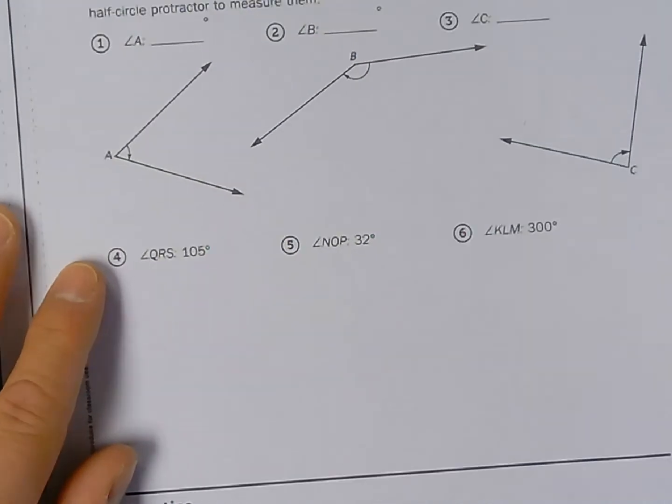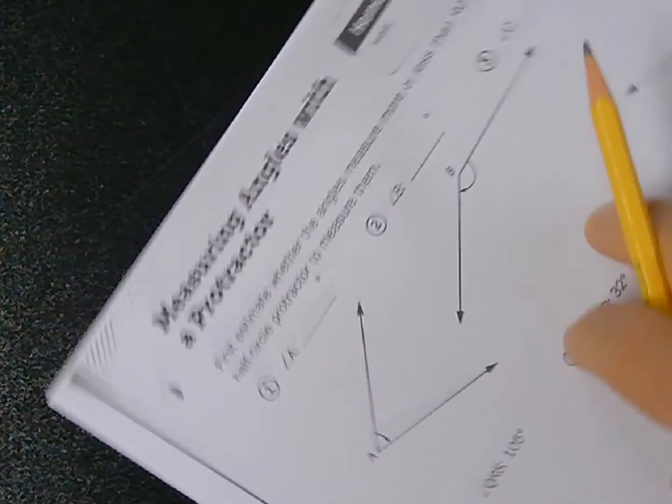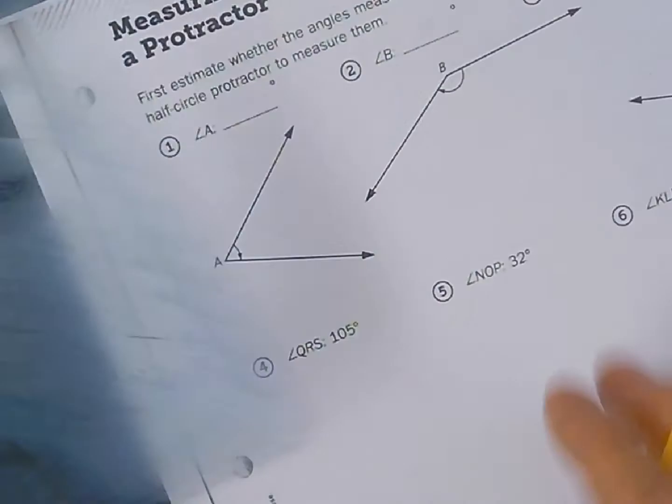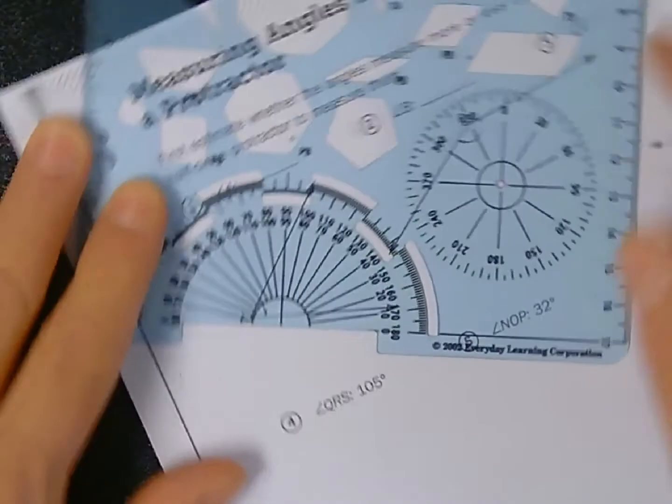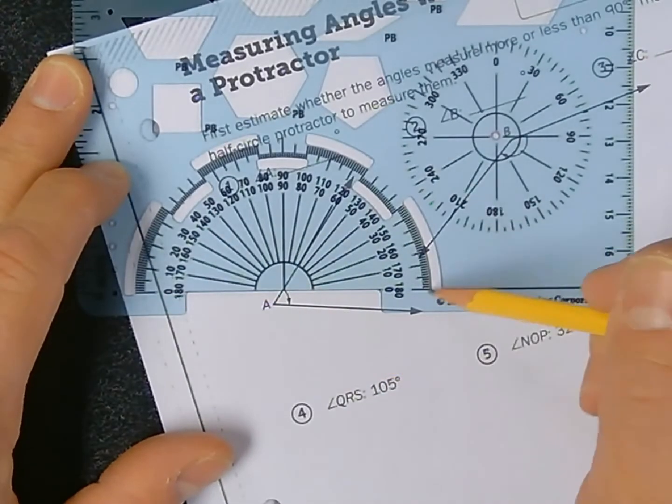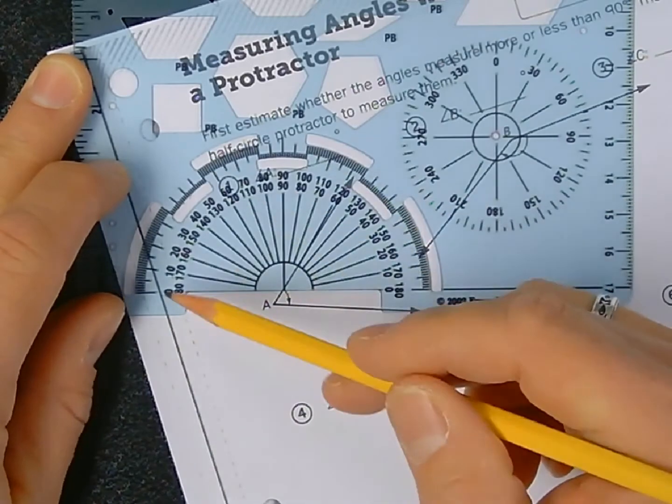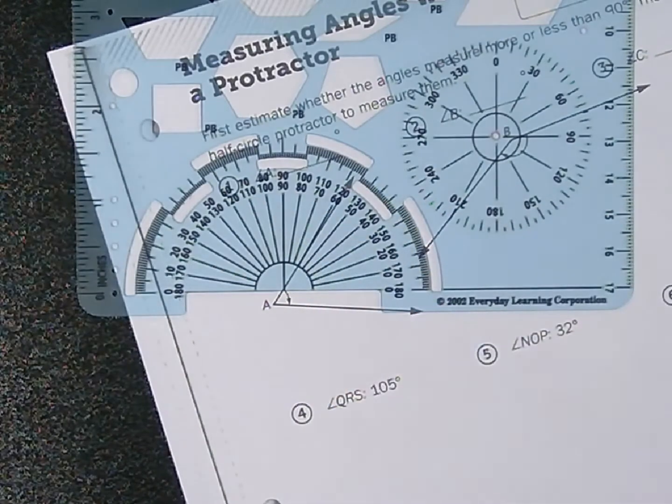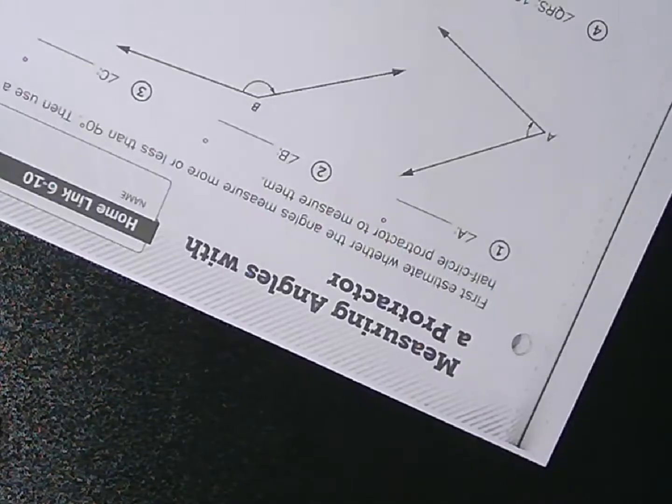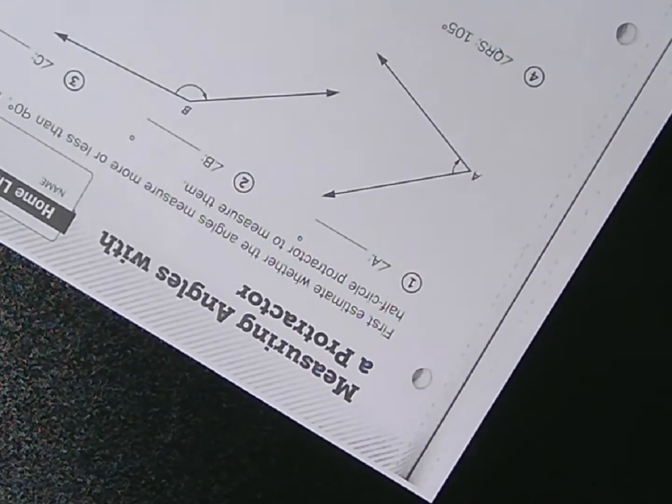So I'm going to measure angle one. One of the reasons why I like using a photocopy paper is that I can easily manipulate it and turn it around. Now your protractor here is numbered zero to 180 from one direction, and then zero to 180 from the other direction. So you can choose from which angle you want to measure this angle, or which position I should say.